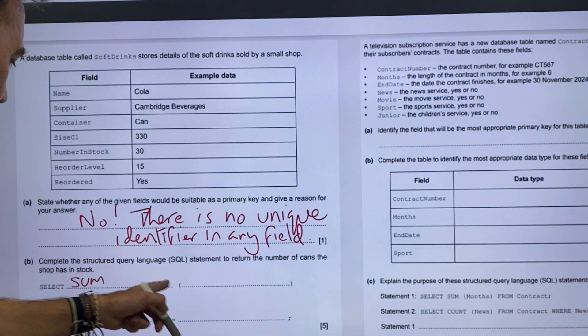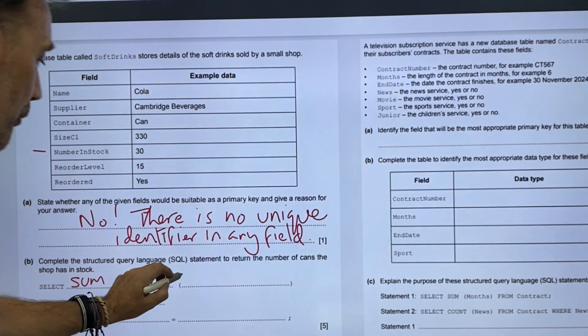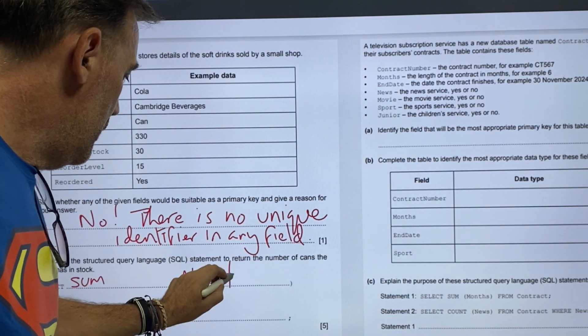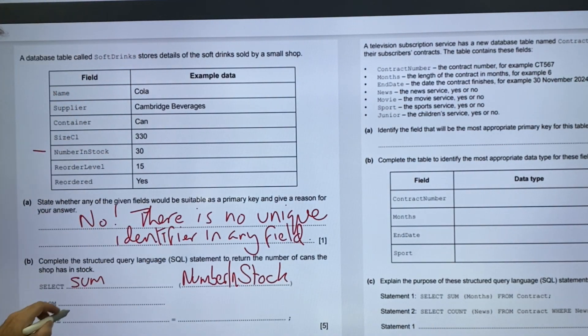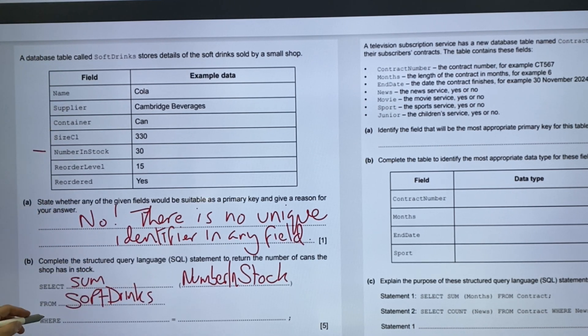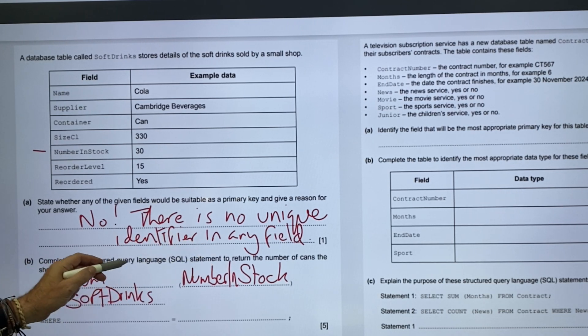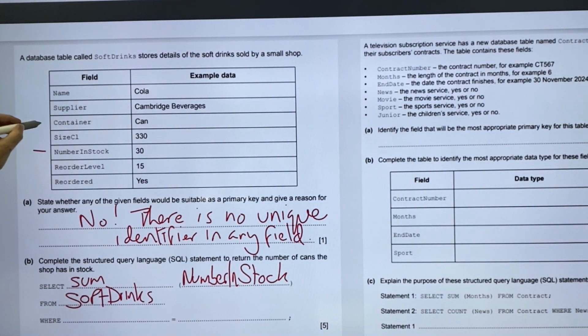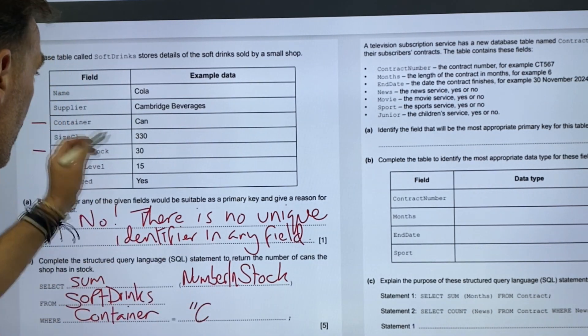I've got brackets here, and then I want number. Here we go, number in stock, from the soft drinks table, where container equals can.